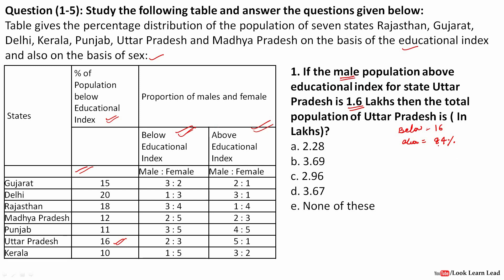This 84 percent is further divided in the ratio 5:1 for males and females. We know the male value, so we calculate: 5/(5+1) × 84% = 5/6 × 84% = 70%. So 70 percent of the total population are males above the educational index.